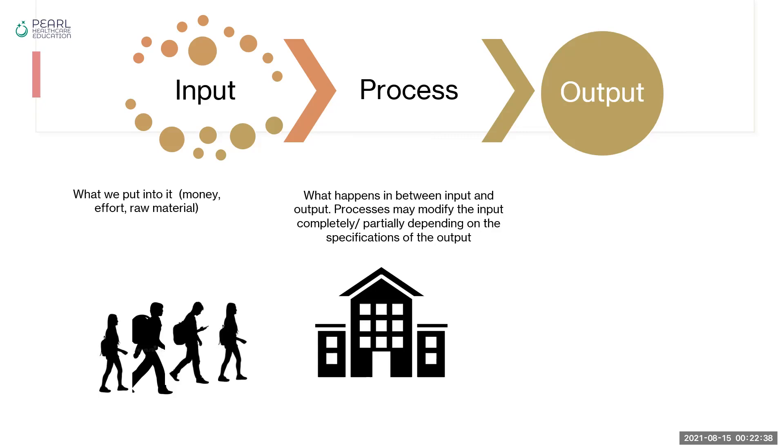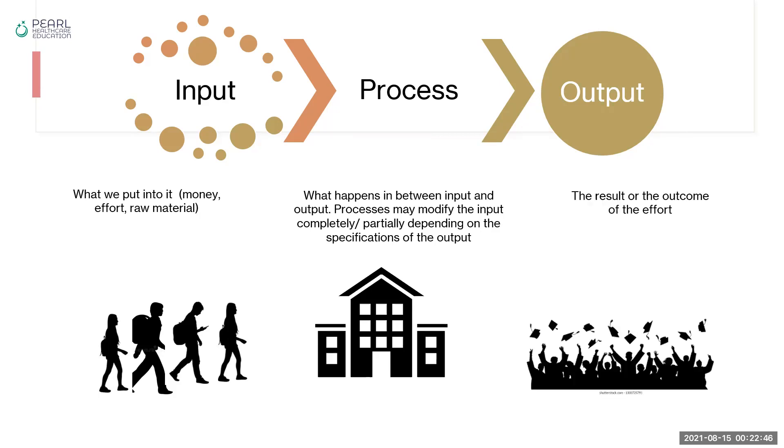So what happens in the nursing institution or university that takes these people who have come into the institution and makes them nurses or graduates at the end of the program? Output is the result of the effort that we have done. So those are the three main aspects of any system where it takes an input, does something with it, and takes it out as an output.